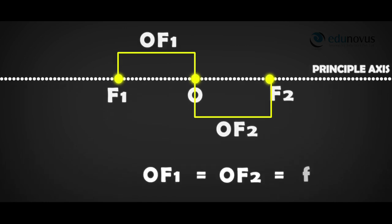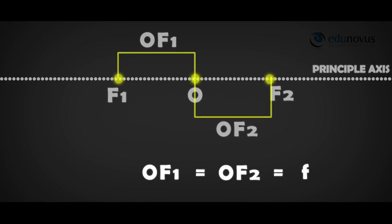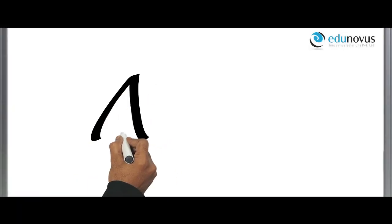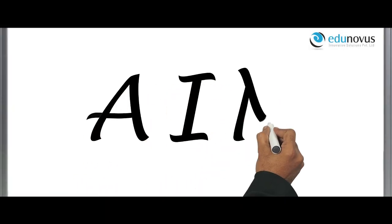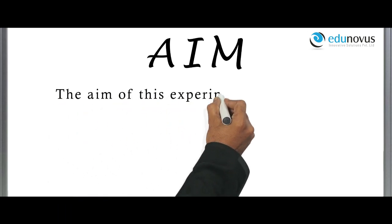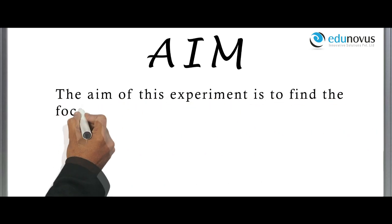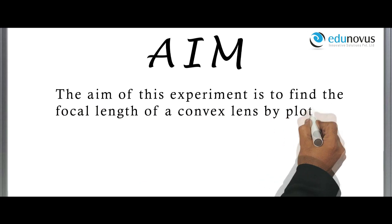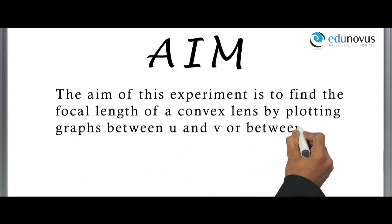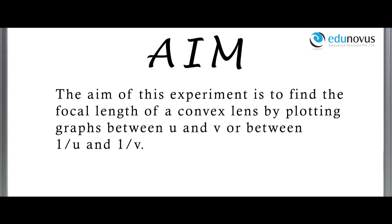The distance between the optical center O and one of the principal foci of the lens is called focal length. The aim of this experiment is to find the focal length of a convex lens by plotting graphs between U and V, or between 1/U and 1/V.